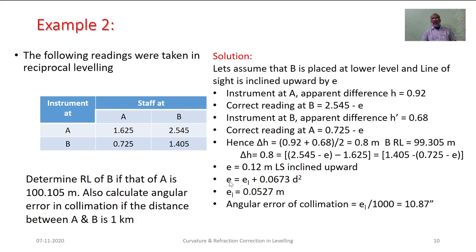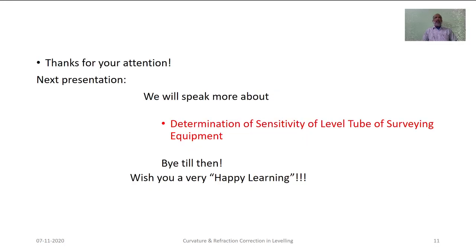The error E is the sum of the error due to inclination of the line of sight and the curvature-refraction correction component. Hence EL is worked out by subtracting the 0.0673 component from this error. This error is spread over the distance between stations A and B, which is 1 kilometer, giving EL/1000 = 10.87 seconds — this is the angular error of collimation. Thank you for your attention. I hope the concept of curvature and refraction correction is clear. In the next presentation, I will discuss the sensitivity of the level tube for surveying equipment.